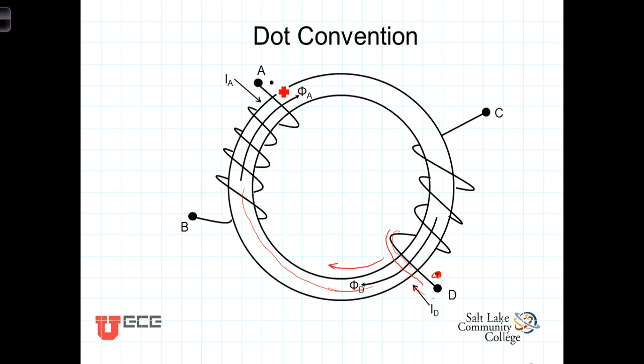Similarly, over here, put your right-hand fingers in the direction of flow, wrap your fingers around that, and your thumb will point in the direction the magnetic field is induced. In this case, the magnetic field of both of those currents is going in the same direction they add together. So, we would have this terminal here dotted and that terminal there dotted.